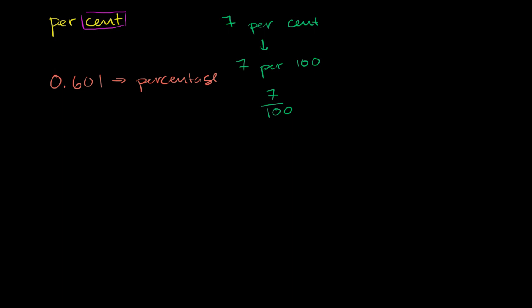You could view it as, I'll just rewrite this part right over here. You could write it as 0.601 over 1. This is obviously the same quantity. You divide anything by 1, you're still going to get that same anything. And I'm going to multiply it by 100 over 100.